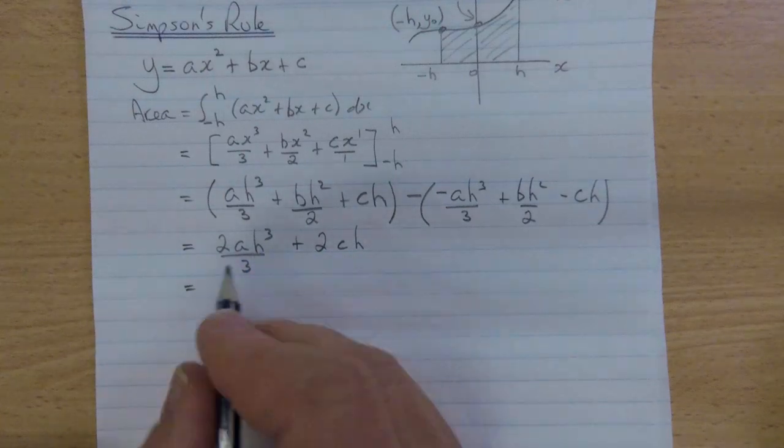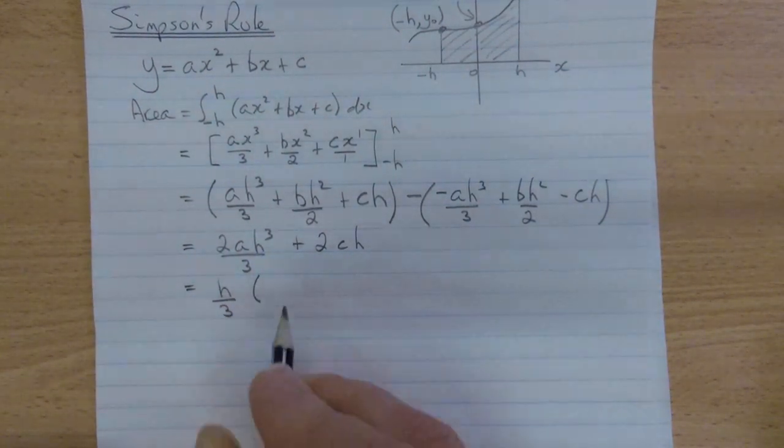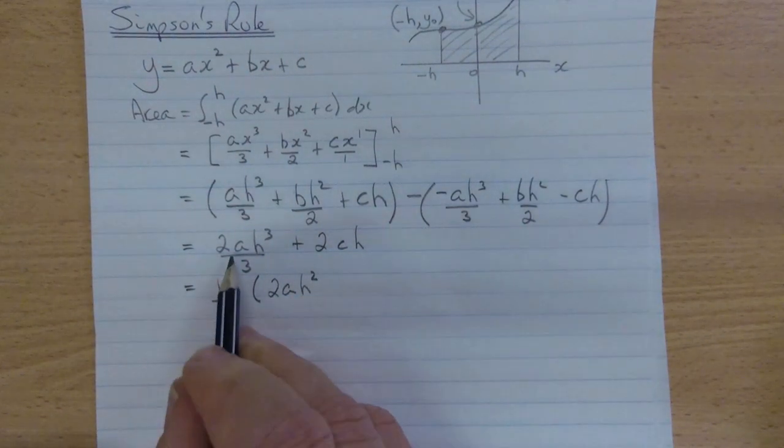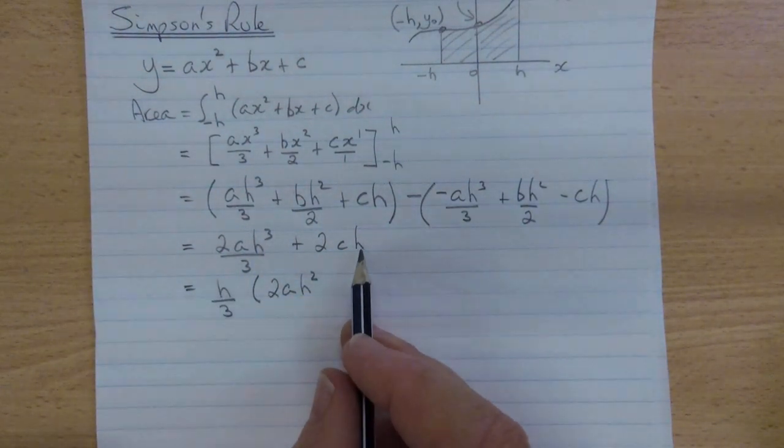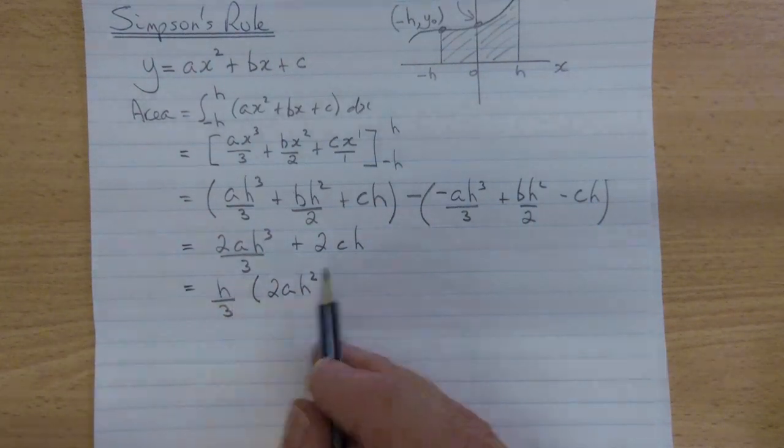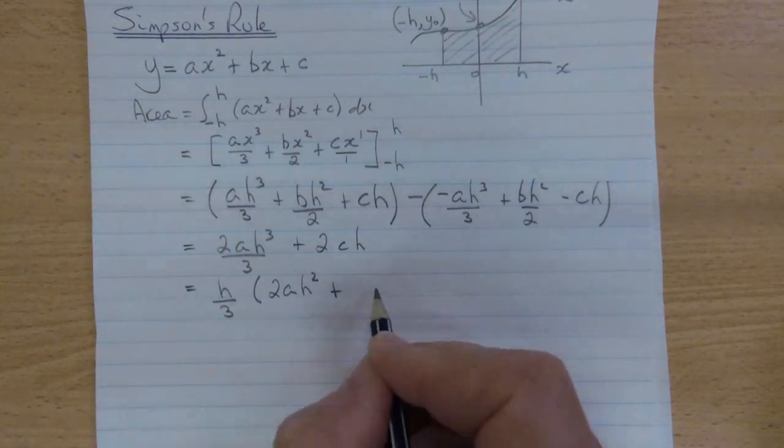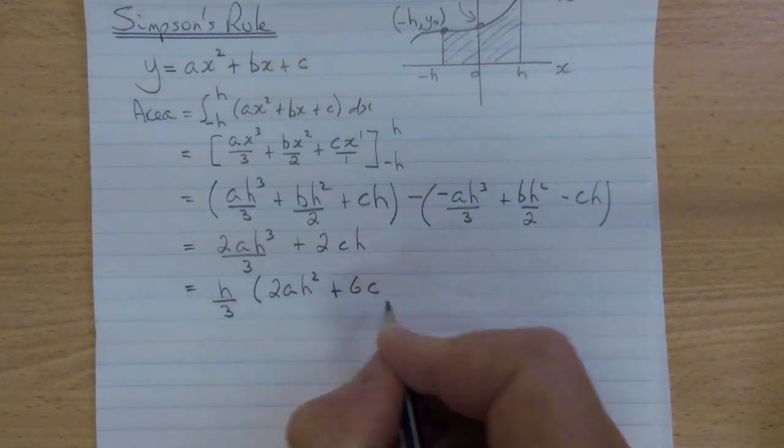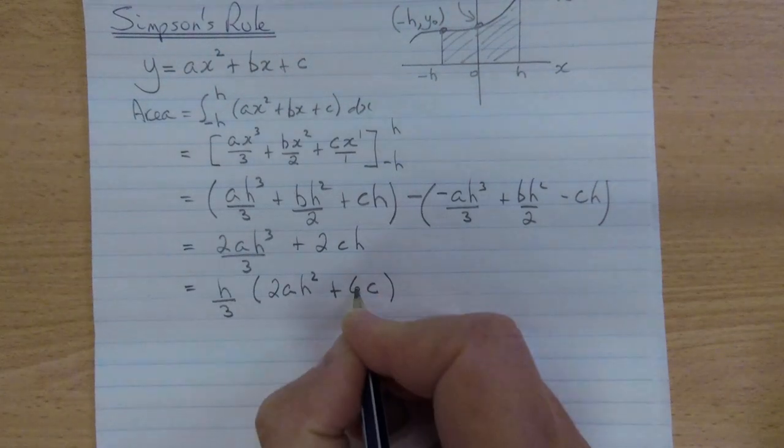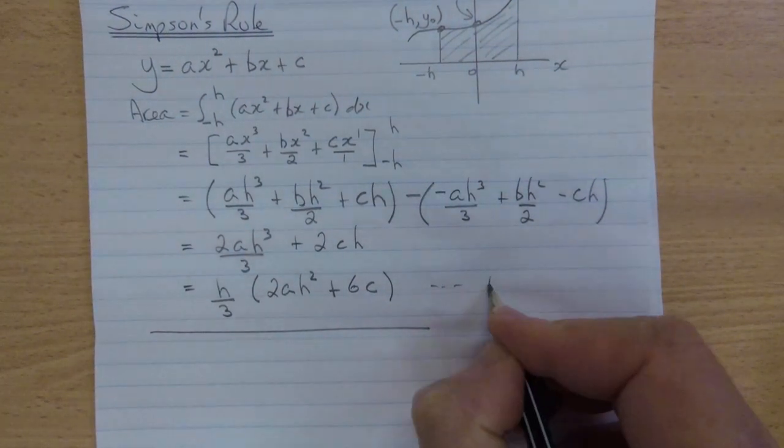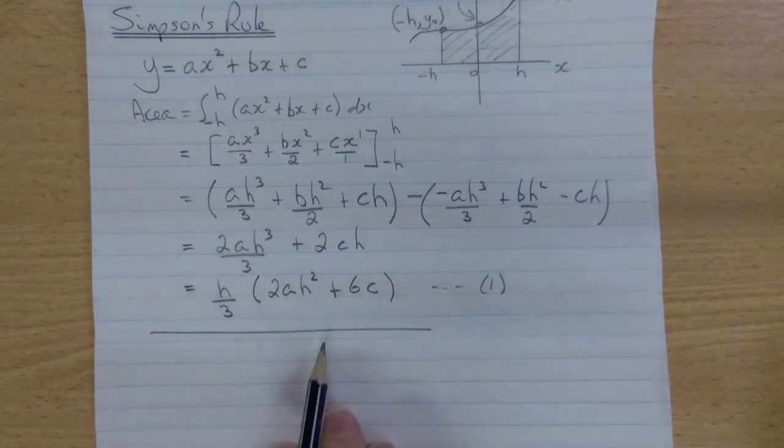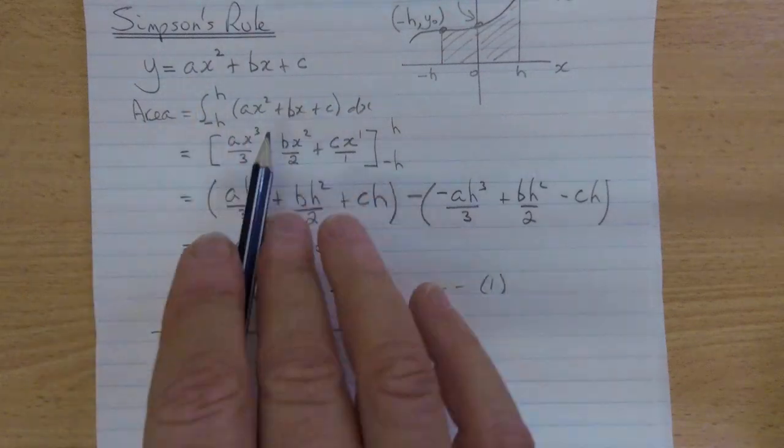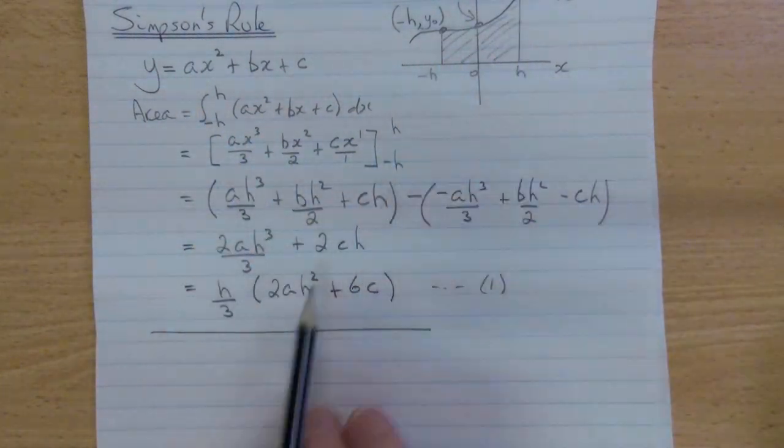Normally, we factorize this. We take a factor of h over 3. This will leave 2 a h squared from our first term. Now, the factor of h has disappeared. What would we need as a coefficient, multiplied by c, so that 1 third times this mystery number equals 2, it would be 6. Now, that I'm going to call equation 1, and I'll be coming back to that result a bit later. That is how I find the area. That's the integral under a generic parabola between two points.